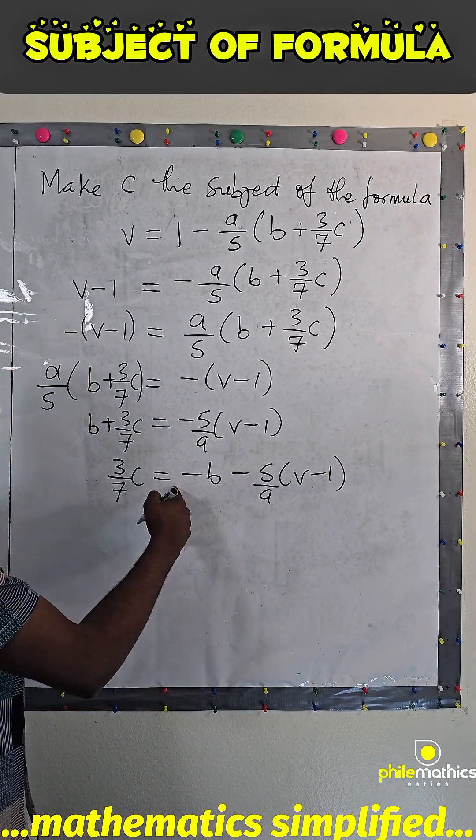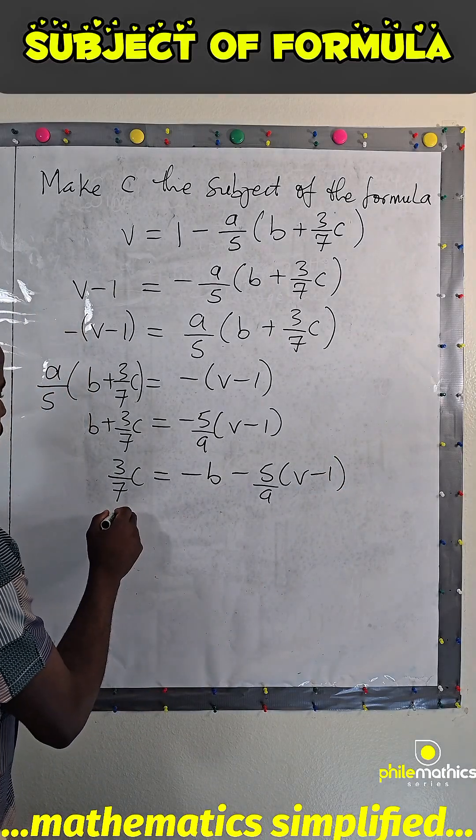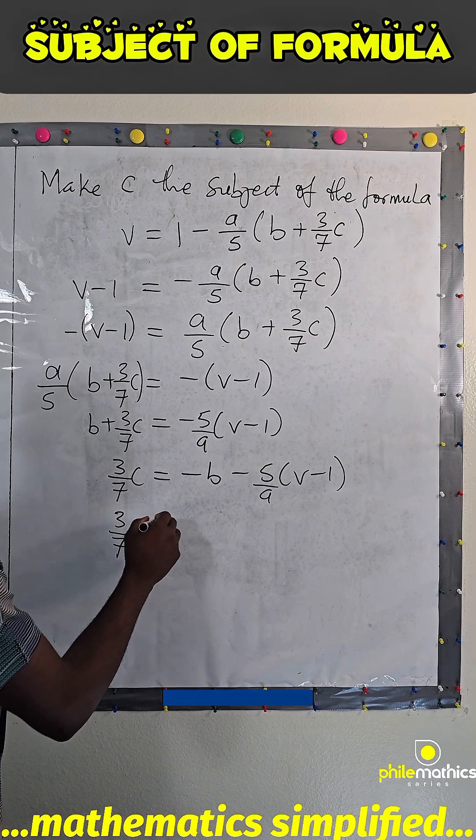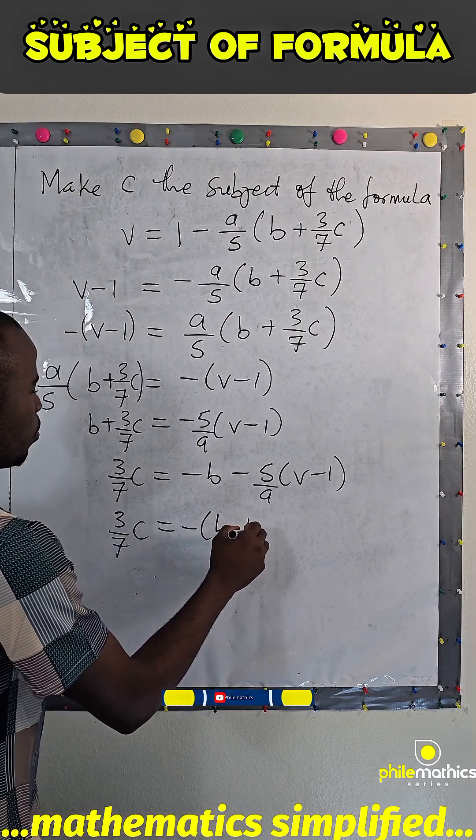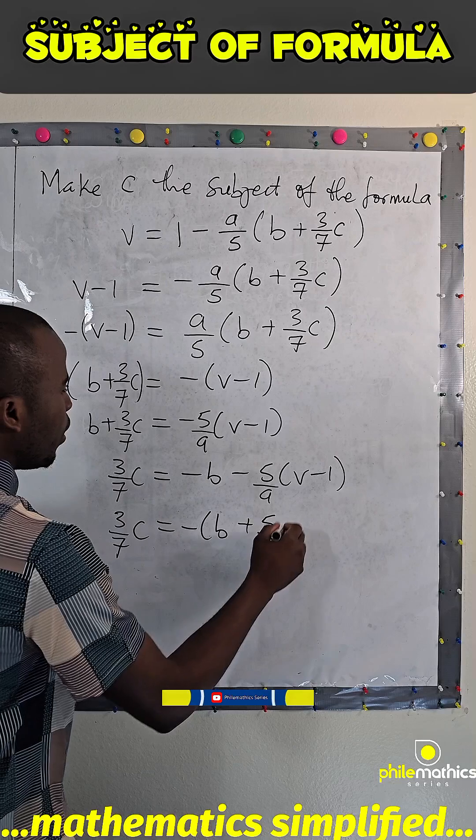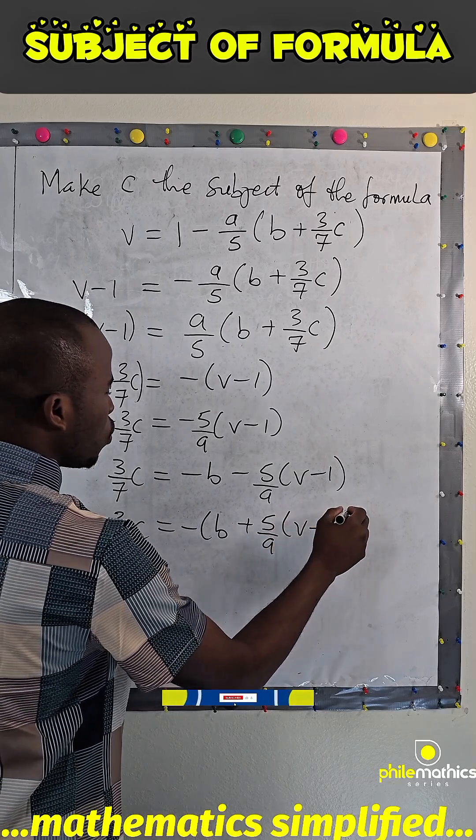I can factorize minus out to get 3 over 7, C equals minus B plus 5 over A, V minus 1, just to make it look neat.